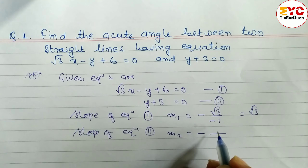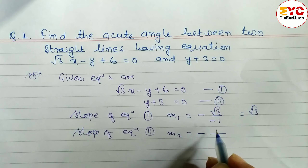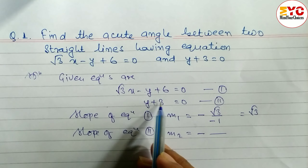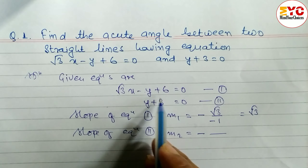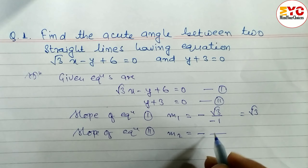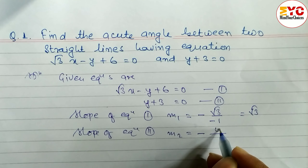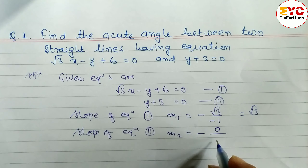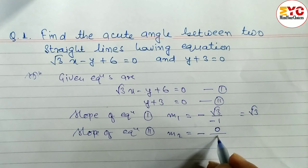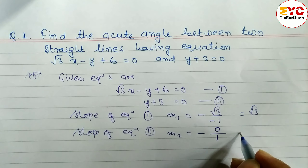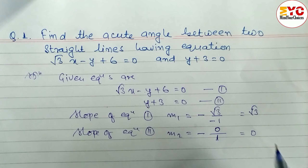The slope formula is minus coefficient of x divided by coefficient of y. What is the coefficient of x? You can see here x is not given in this equation — the variable x is not there. It means the coefficient of x will be 0, and the coefficient of y is 1, so we write 0 divided by 1.